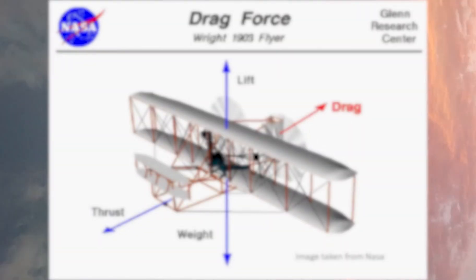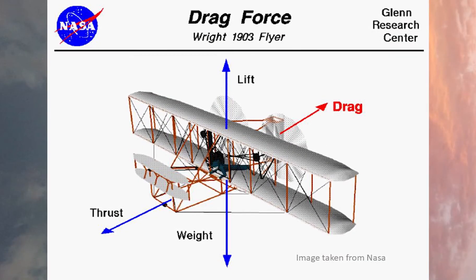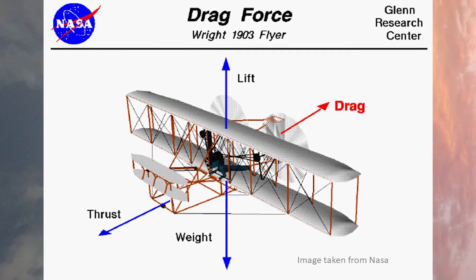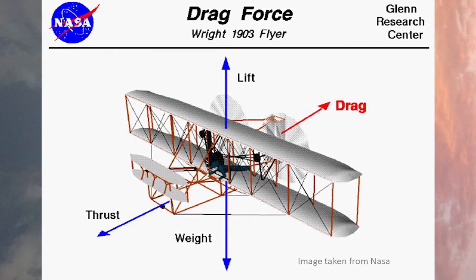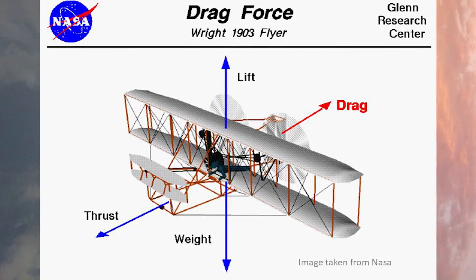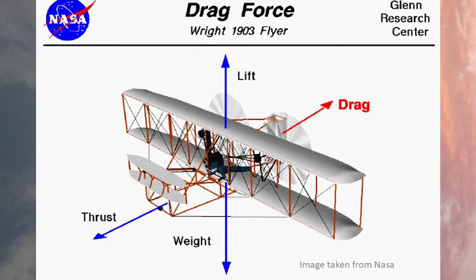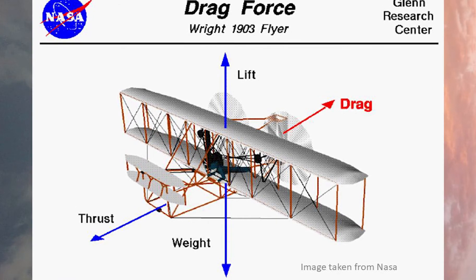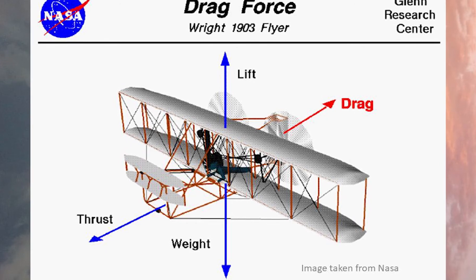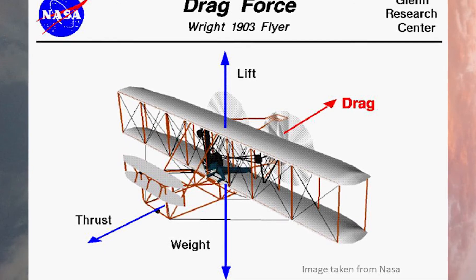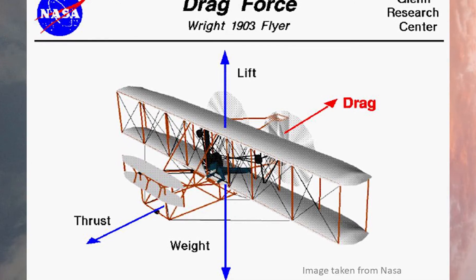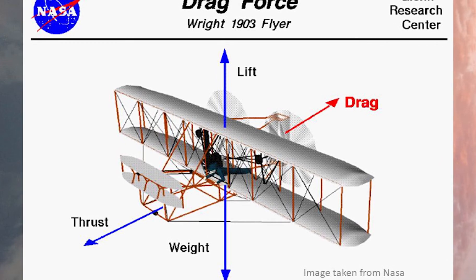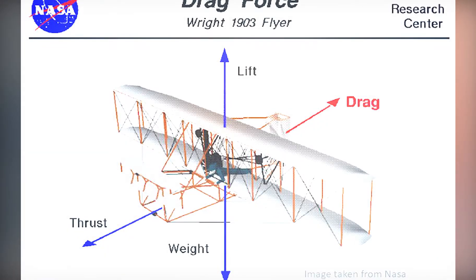The rotatory motion of the propeller pushes the air backwards, which is called thrust. The propellers used back in the 1800s were as thick as that of a boat and were powered by steam engines. Drag is a mechanical force generated by the interaction and contact of a solid body with either a liquid or a gas.